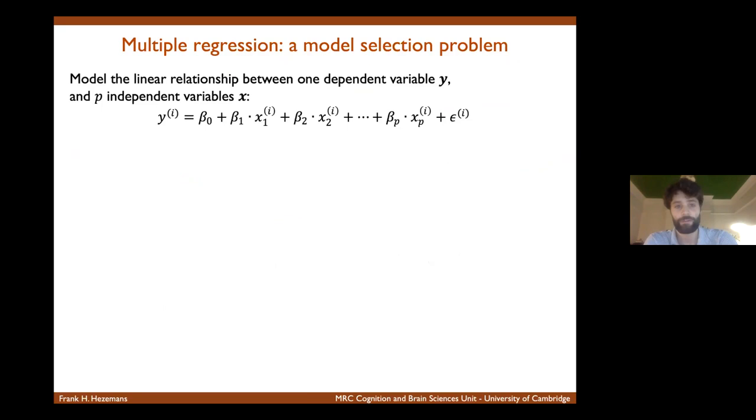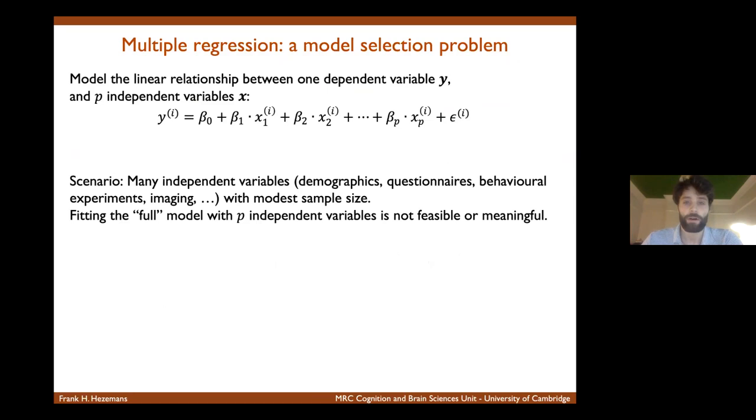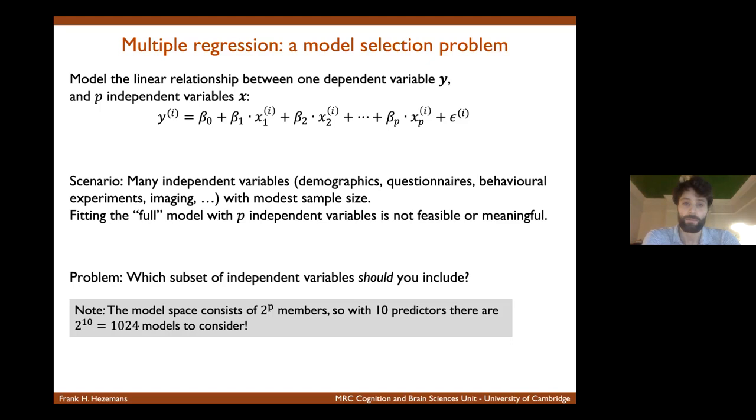So we're all familiar with multiple regression analysis where the outcome variable is modeled as a linear combination of a set of predictor variables and some unexplained variance. Now, in psychological research, at least speaking for myself here, we often deal with relatively modest sample sizes with a large collection of variables that you could potentially use to explain the outcome. And so in this scenario, you're faced with a model selection problem because it's not always straightforward to determine which predictors you should use to explain your dependent variable.